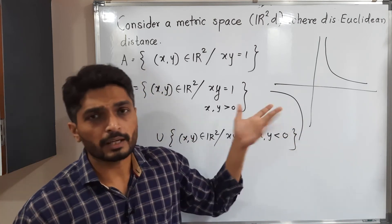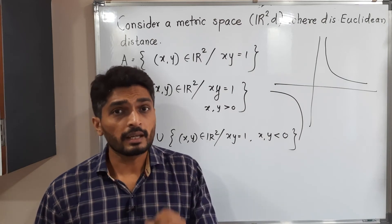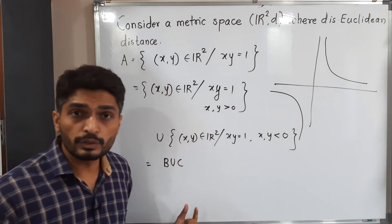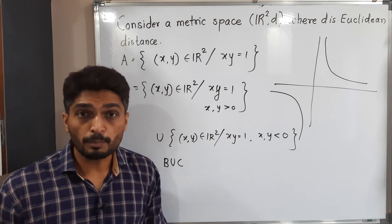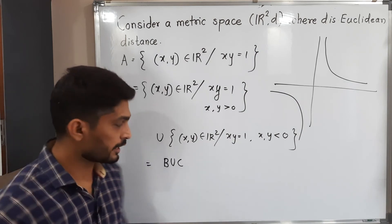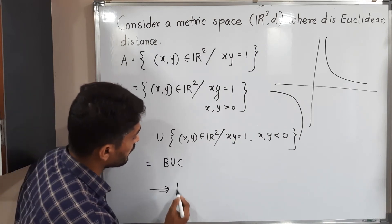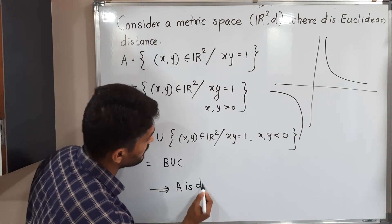You can by using diagram easily see that A can be expressed as a union of two non-empty proper separated sets. So what is our conclusion? Therefore A is disconnected.